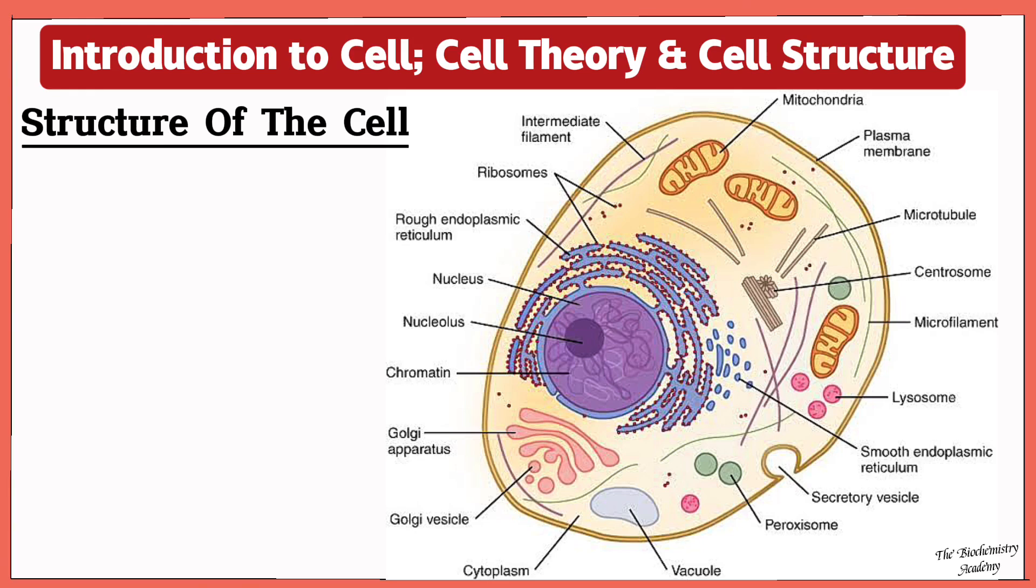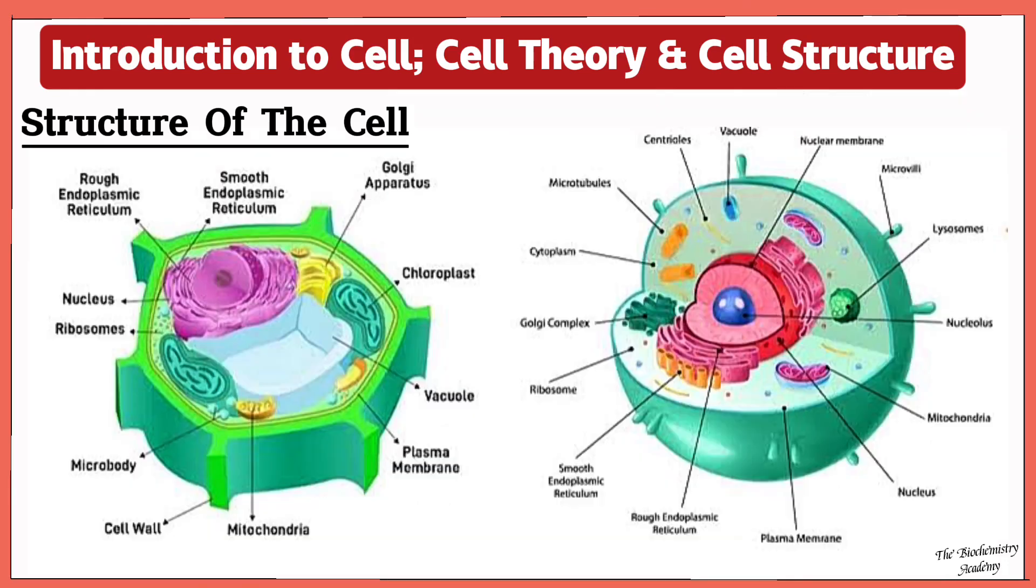So we have been talking about the animal cell, so we will chip in the plant cell because there are certain similarities and also differences between the animal cell and the plant cell. Because the plant cell has certain characteristics that are not found in the animal cell.